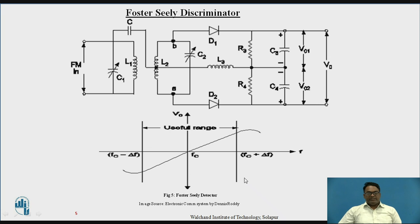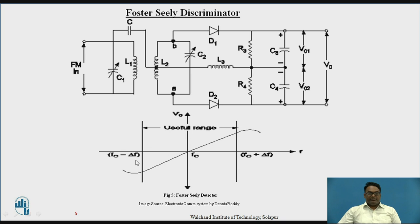Below is the frequency response of the same. The useful range lies between Fc minus ΔF and Fc plus ΔF, where the circuit works efficiently. Fc is the carrier frequency and ΔF is the frequency deviation.